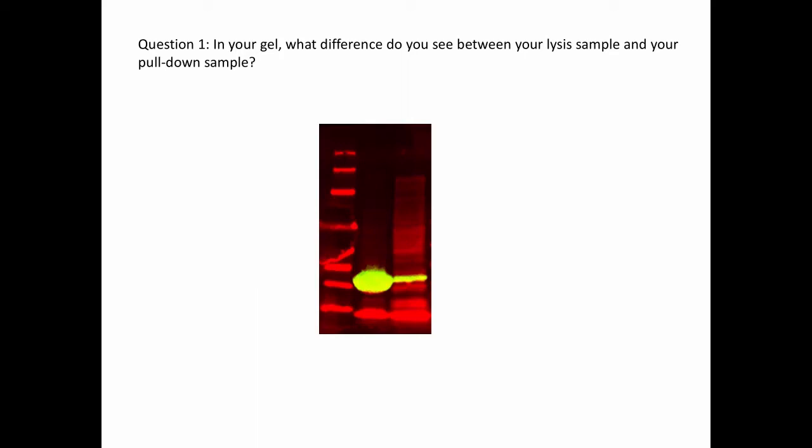All right, so I wanted to go over quickly the Western blot that you guys generated as part of Lab 9. Your last homework assignment for the lab is to analyze your Western blot. Remember you don't have to print out a copy, you just need to fill in the three homework questions on page 8 of the lab packet. I'm going to go through each question and walk you through what you should be looking at, because sometimes it's confusing to analyze them if you haven't seen these before.